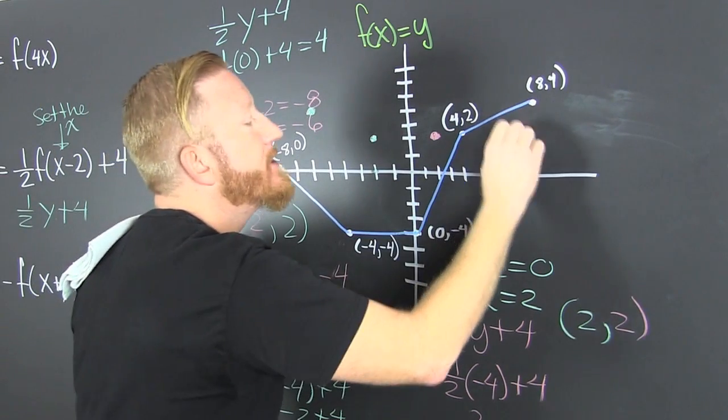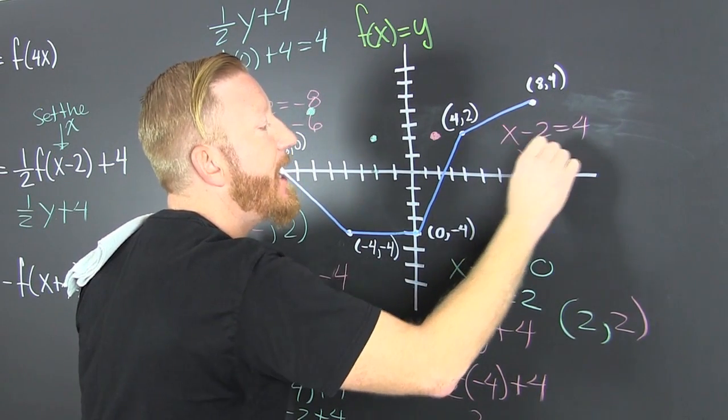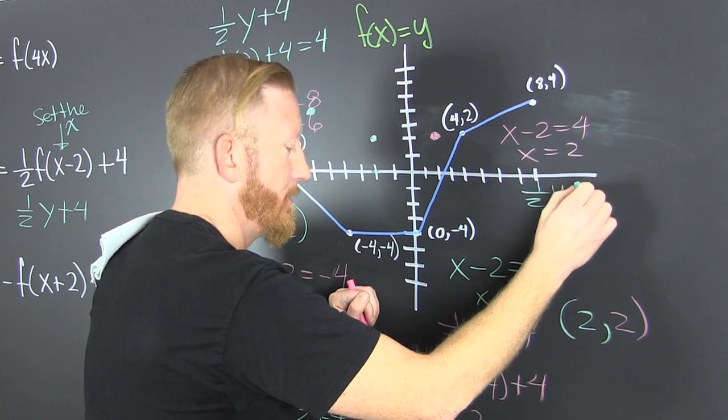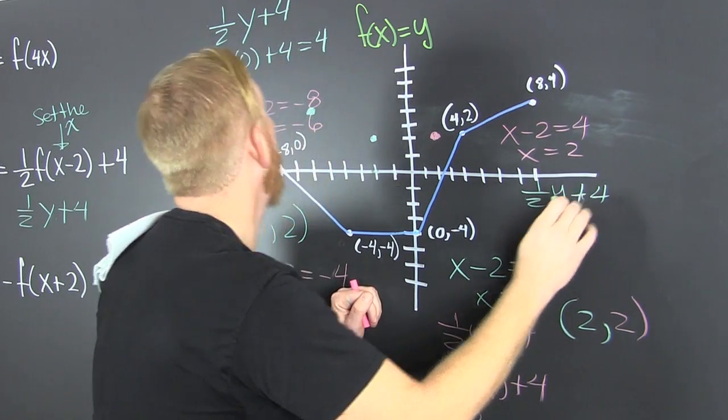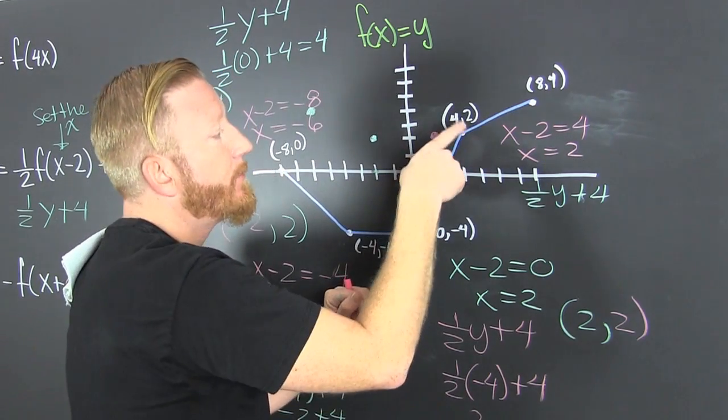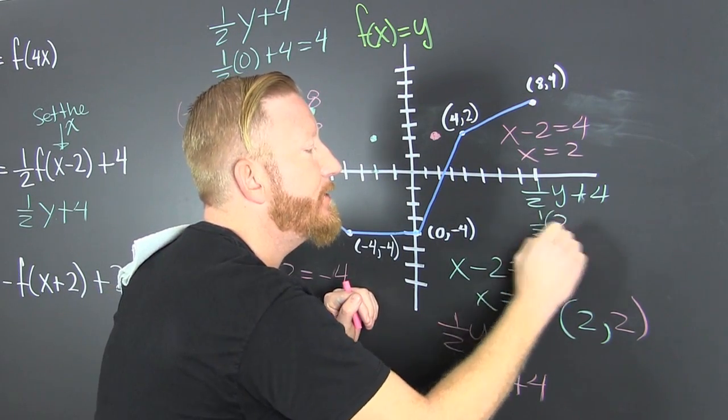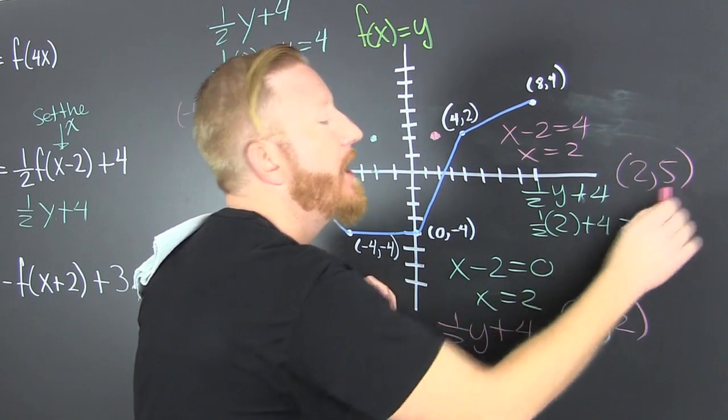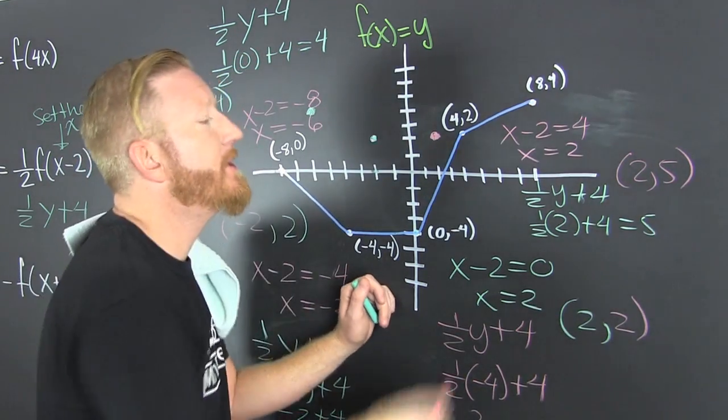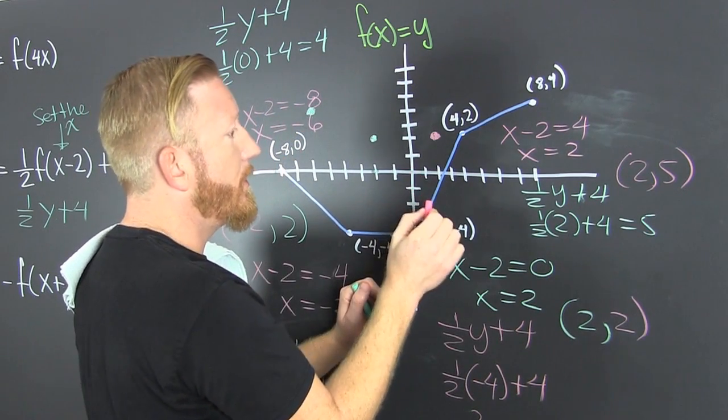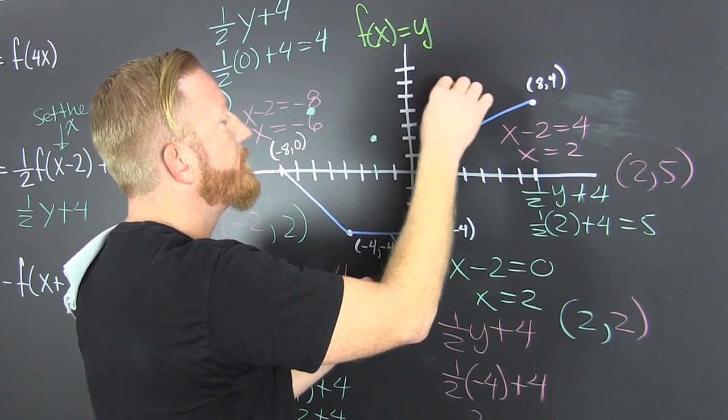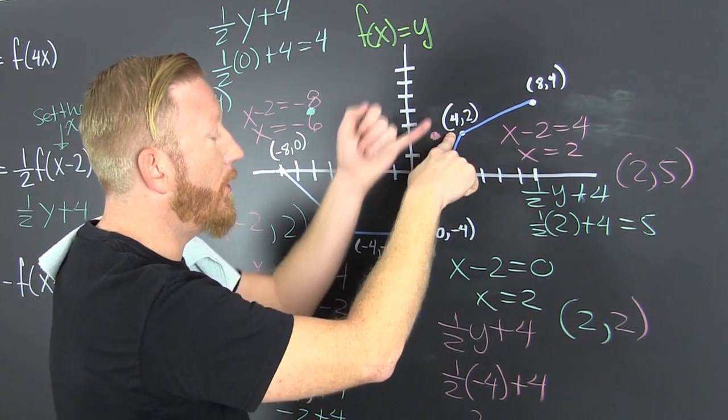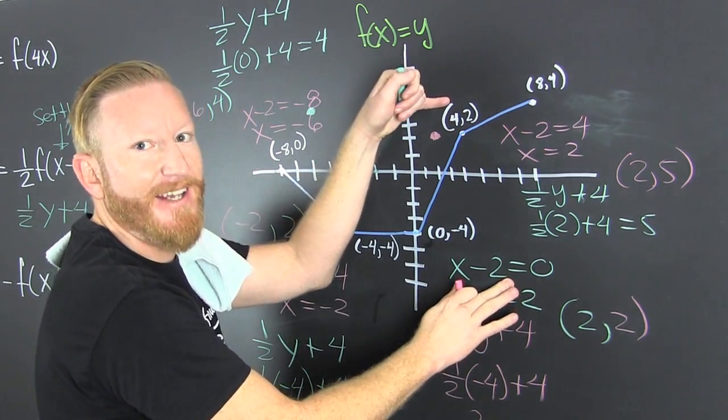Now we're translating that guy right there. So x minus 2 is equal to 4 and x is equal to 6. That's our new x value. 1 half y plus 4 is what we're using to translate that. But what's our y? It's 2. So that's 1 half 2 plus 4 is 5. So our new point is 6, 5. I don't work these out ahead of time. If I made a mistake there, comment down below. I caught it.